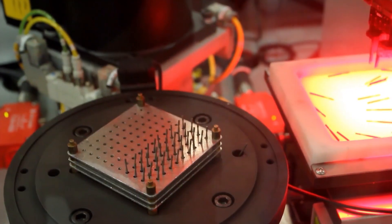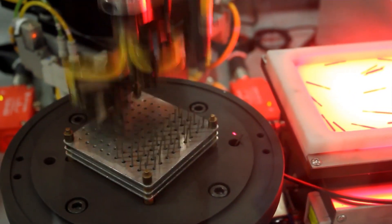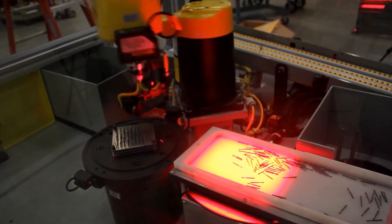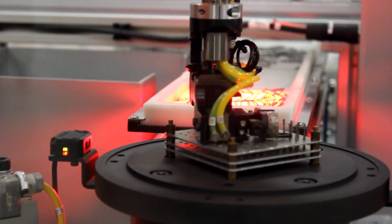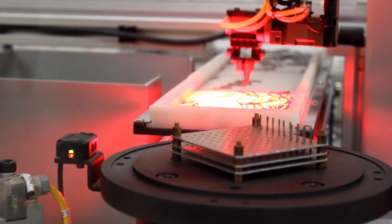FANUC SCARA robots are ideal for this type of high speed operation involving precision pick and placement of small parts. FANUC IR Vision easily integrates into the system for a fast and simple parts setup.